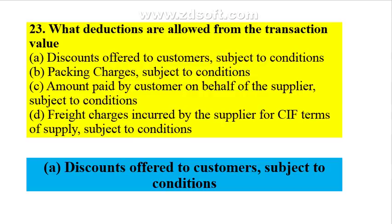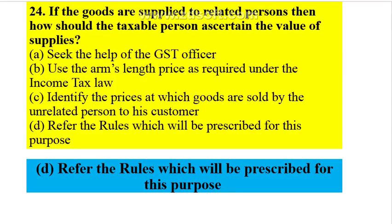What deductions are allowed from the transaction value? Discounts offered to customers are allowed subject to conditions. If goods are supplied to related persons, the taxable person should refer to the rules prescribed for this purpose — effectively the arms length price, meaning where the buyer is willing to buy and the seller is willing to sell.